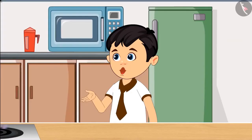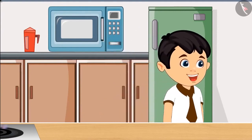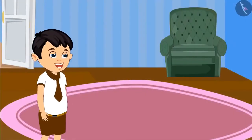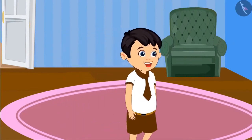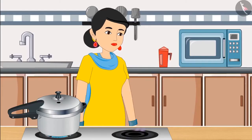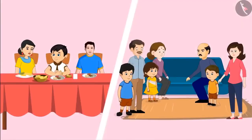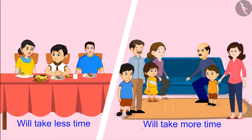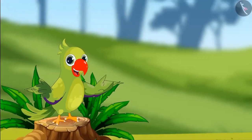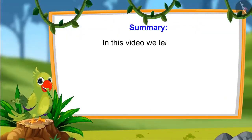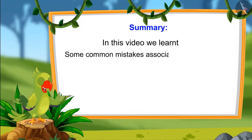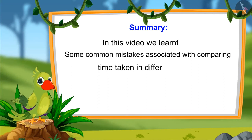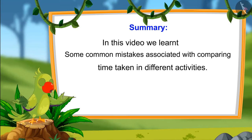Chotu understands and says he will have some biscuits and go play with Tito, asking his mother to call him when food is ready. So children, you saw that it takes less time to cook for three people and more time is required to cook for more people. That is it for today. In this video we learned about some common mistakes which should not be made when comparing the time taken in different activities. I hope you have understood this topic completely. Bye-bye friends.